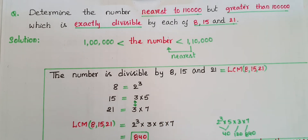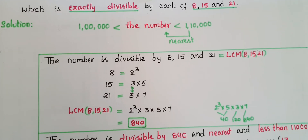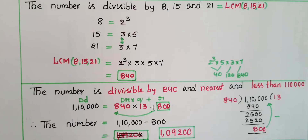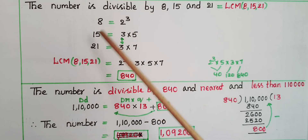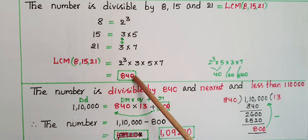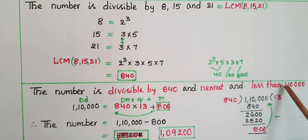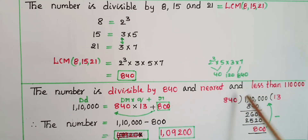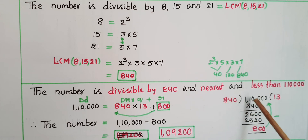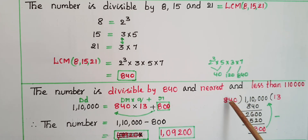The product of these numbers equals 840. So the required number must be exactly divisible by 840, and it is nearest to one lakh ten thousand. Dividing one lakh ten thousand by 840 gives a remainder of 800, so one lakh ten thousand is not exactly divisible by 840. We need to find the nearest number that is exactly divisible by 840.